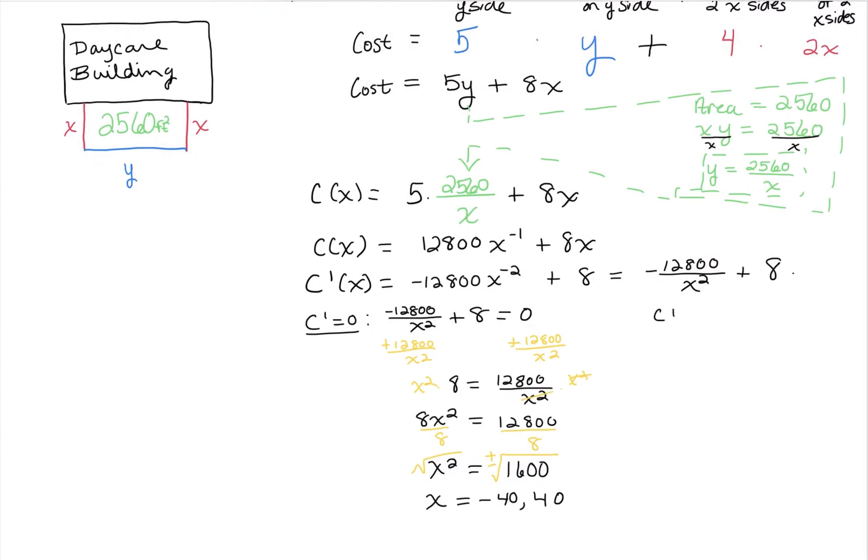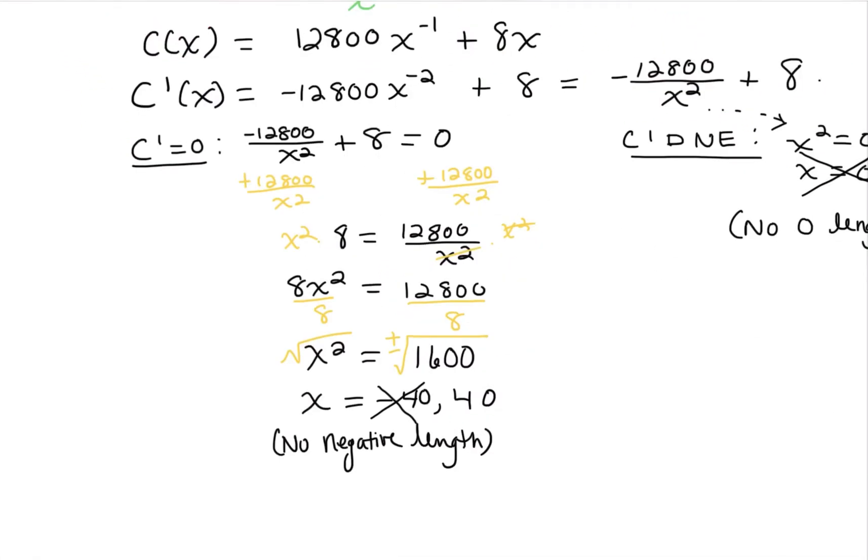Now, again, you did want to think about, for critical points, where c prime does not exist, and you do have a denominator that could go to 0, where that x squared there would go to 0, would be at x equals 0. But there's a couple of these values that we can throw out. So we can't have a 0 length. So no 0 length on a dimension of a side of a fence. And similarly, it wouldn't make any sense to have a negative length. So we can throw out the negative 40. So this will happen a lot with an application problem. There will be solutions that just won't make any practical sense for the application problem. So we're left with what is most likely going to be the 40 feet, the appropriate x length. But so far, all we know is this is a point of horizontal tangency. We don't know if this is a min or a max or potentially neither. So we need to verify.